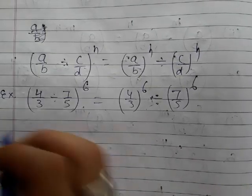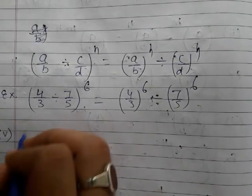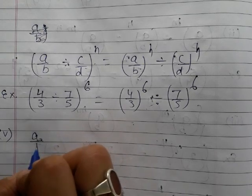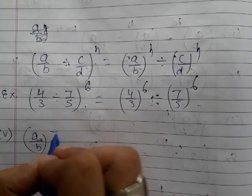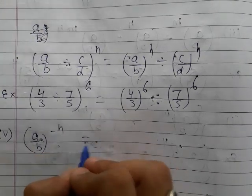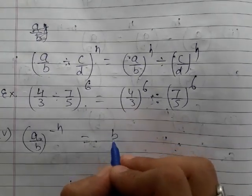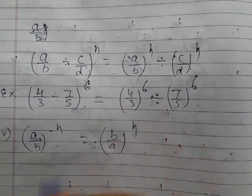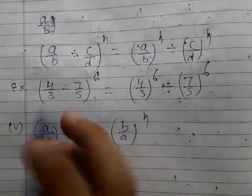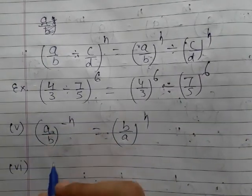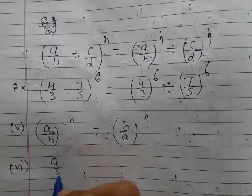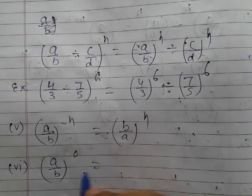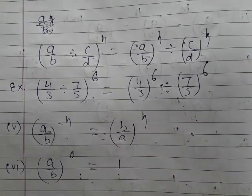The fifth law states that (a/b)^(-n) can be written as (b/a)^n. And the next law says that if a rational number a over b is raised to the power 0, then the answer is 1.